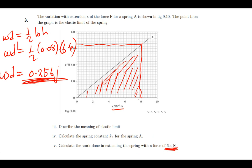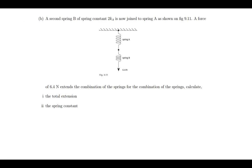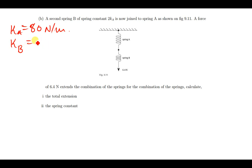Now let's move to part B. A second spring B has a spring constant two times KA. Since KA equals 80 newtons per meter, KB equals 160 newtons per meter. Spring B is joined to spring A, and a force of 6.4 newtons extends the combination. We need to calculate the total extension of the combination.